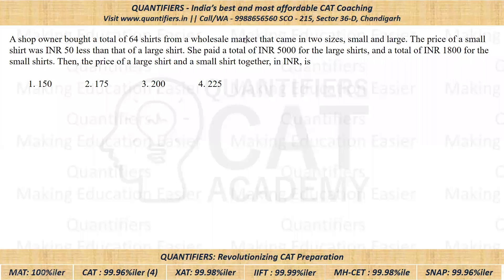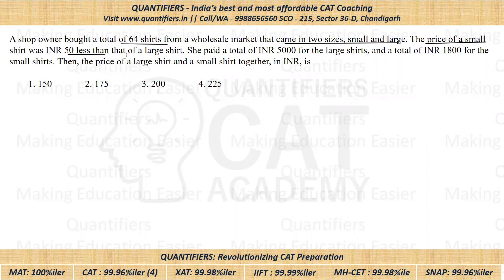Now let us come to the question. I hope all of you have given it a try. The question says: a shop owner bought a total of 64 shirts, which came in two sizes — small and large. The price of a small shirt is 50 less than that of a large shirt. She paid a total of 5,000 for large shirts and a total of 1,800 for the small shirts. We have to find the price of a large shirt and a small shirt together.